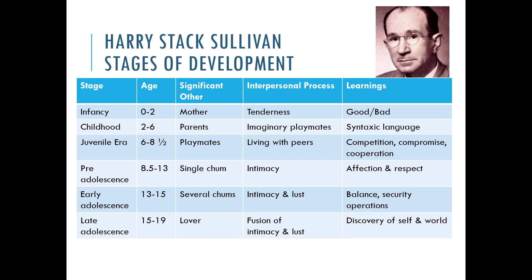Instead of Erikson's conflicts that you solve on the right or wrong side, Sullivan thought that at different stages you had different significant others — different people who played the main role in your development at that point. Infancy is governed by the mother; by childhood, the mother and the father; by the juvenile era, playmates start to become really important; by pre-adolescence, finding a single chum — having one person who is really your best friend — is really important. Early adolescence involves having several chums to fit in, and late adolescence involves developing romantic attraction, which he called the lover phase.